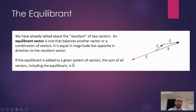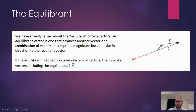The equilibrant is equal in magnitude but opposite in direction to the resultant — so resultant and equilibrant are opposite vectors. If you add the equilibrant and resultant, because they're opposite, you get the zero vector. Similarly, if you add F1 plus F2 plus the equilibrant, you get zero. The equilibrant balances all the other vectors in a problem.